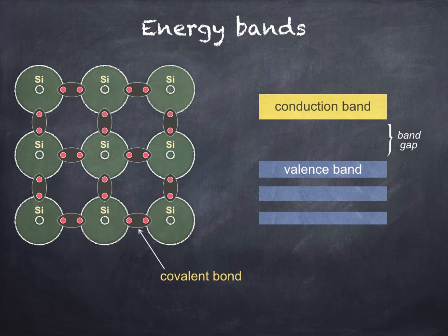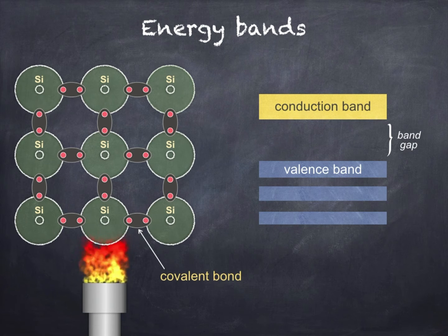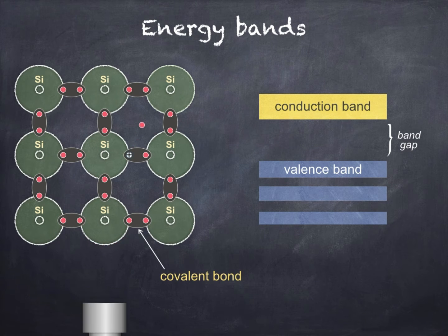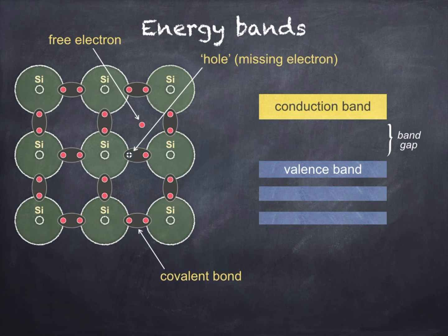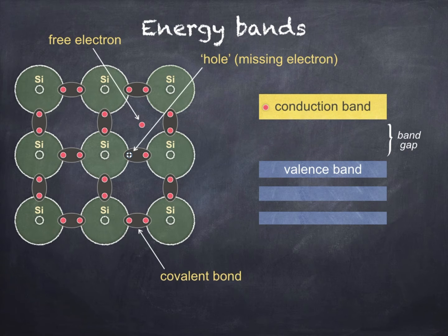Let's look at what happens when we add some heat. An electron has gained enough energy to break the covalent bond and is now free to take part in conduction, meaning that the resistance of the material is reduced. The absence of the negatively charged electron in this position leaves behind a net positive charge, which we call a hole. In terms of energy bands, the electron which was initially in the valence band jumps to the conduction band, leaving behind a hole in the valence band. The band gap, or energy gap, is just the energy required for the electron to break the covalent bond and jump into the conduction band.